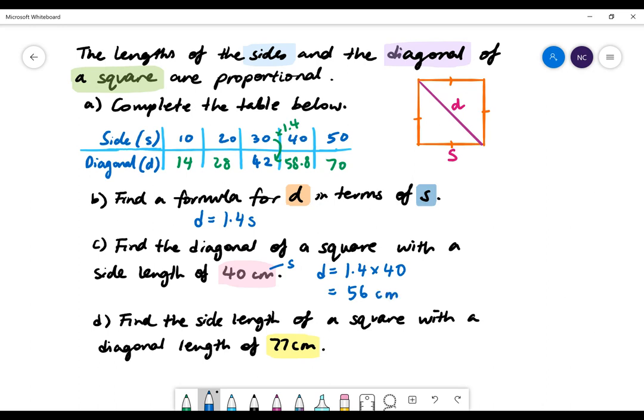Part D: Find the side length of a square with a diagonal length of 77. 77 represents D. So when we substitute it into our formula, 77 will equal 1.4 multiplied by S. To find S, we'll do 77 divided by 1.4, which will give us 55.